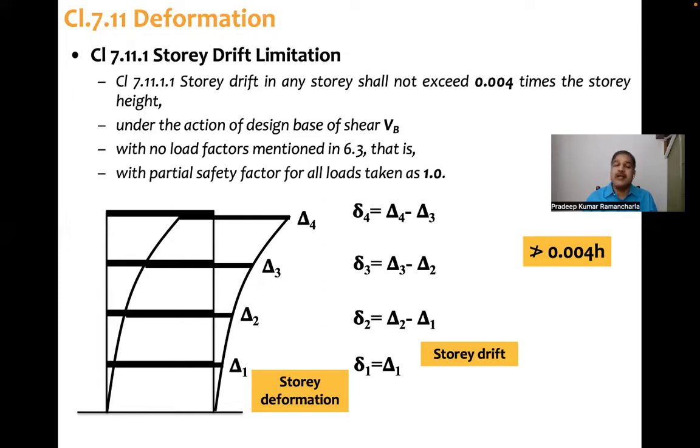And this drift value should not be greater than 0.004 times height of the floor. So typically 3 meters is the story height. What code says is inter-story drift shall not exceed 12 millimeters.